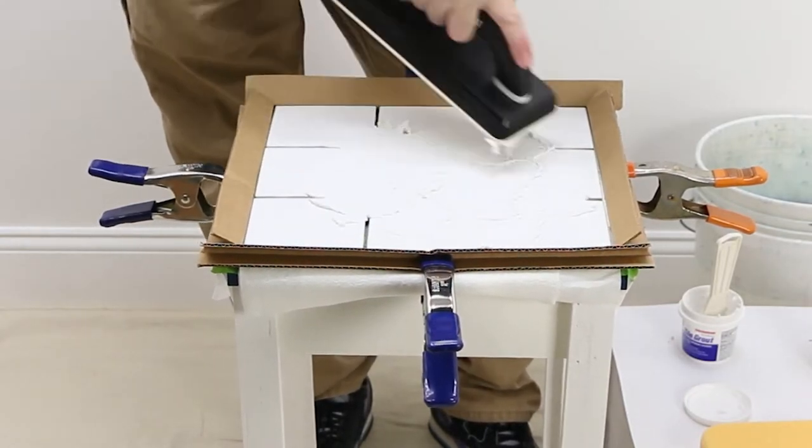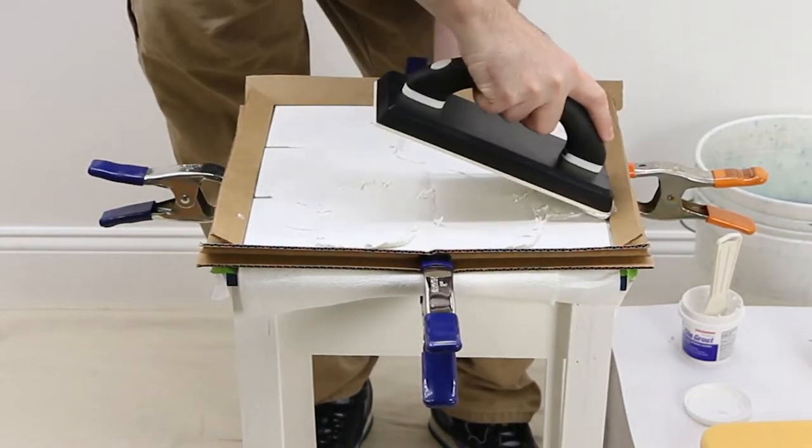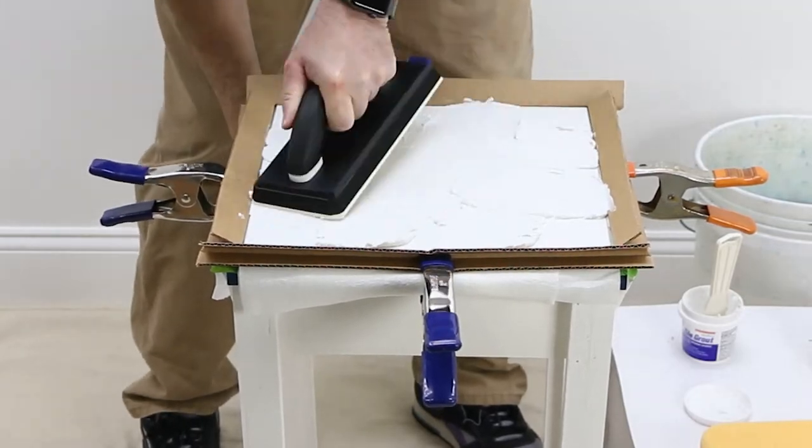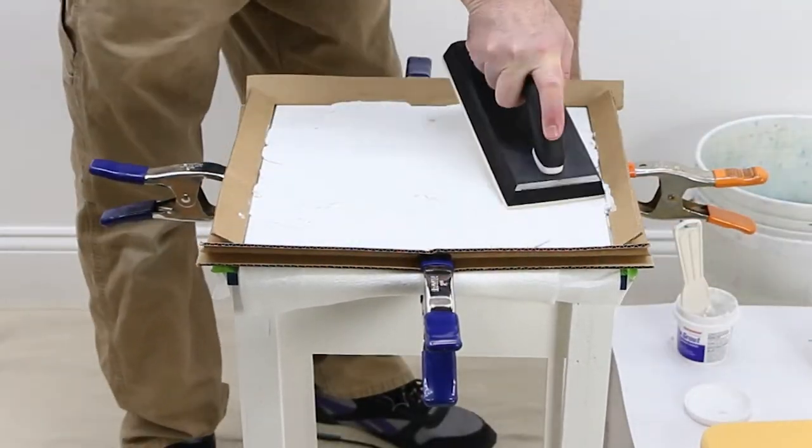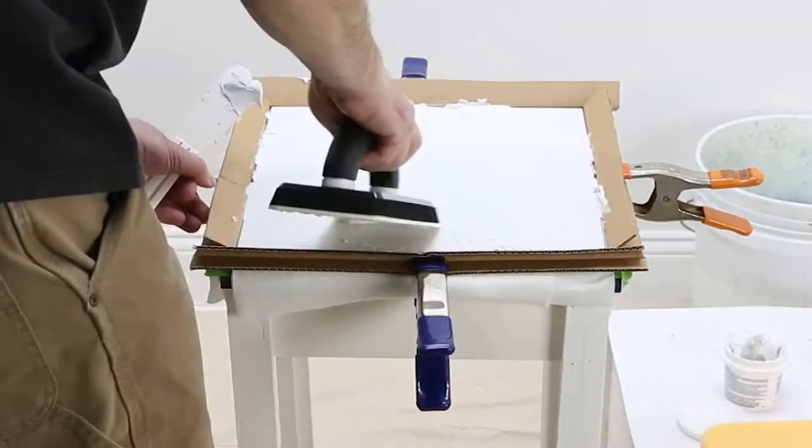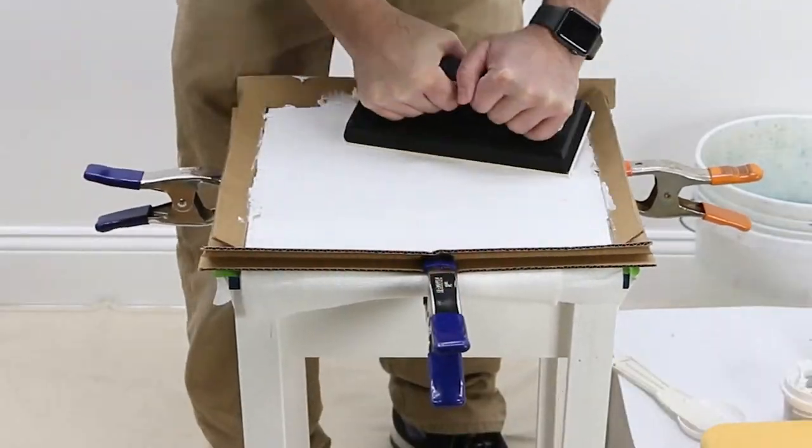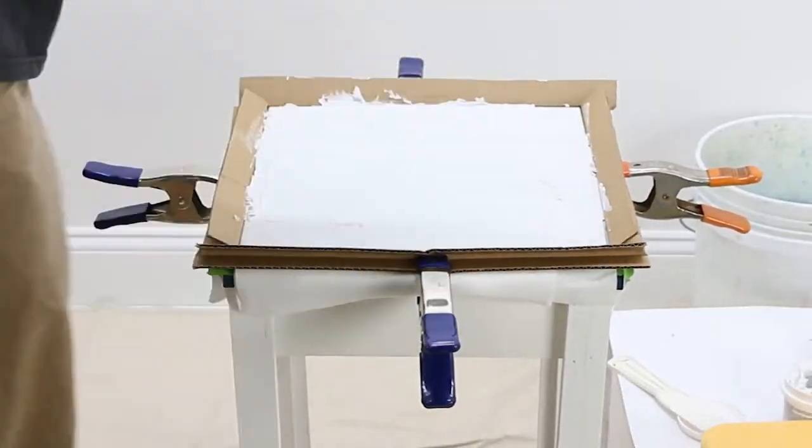Next, apply the grout and press into the gaps using a grout float at a 45 degree angle to the grout joints. Use the float to remove excess grout from the surface of the tiles.